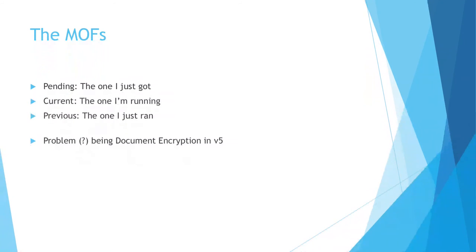It should be feasible because the MOFs are not encrypted on the pull server — they come across in cleartext through an HTTPS channel. The LCM is what's encrypting them locally. Therefore, that certificate has to be somewhere on the machine we can get to it. Crazy resource should be able to decrypt it, dynamically create a new MOF, encrypt it, stick it in pending.mof, and then the LCM will copy it to current.mof and read it.